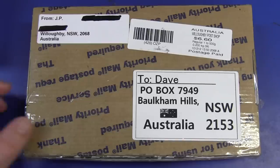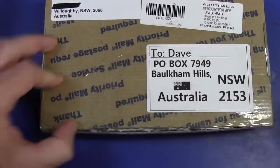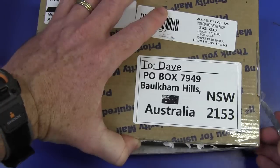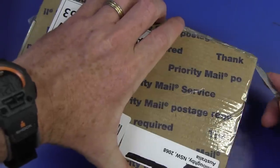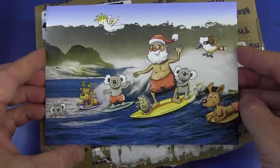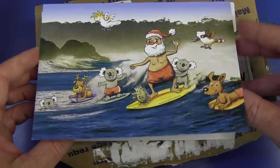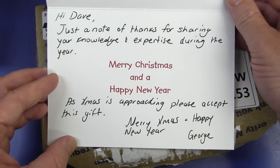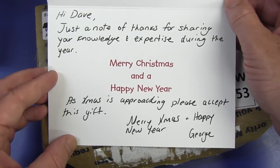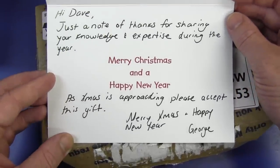Beauty. And we've got another Australian one from JP from Willoughby here in Sydney. So let's crack this sucker open and see what we have got. JP. Just initials. Doesn't have a name. Maybe there's a name in the... Oh, what have we got in here? Oh, look at this. Oh, is it a Christmas card? Hey. Aussie Santa. Hey, Aussie Santa. There you go. Cockatoo, couple of koala bears, kangaroo, kidna, kookaburra, beauty. Hi, Dave. Just a note of thanks for sharing your knowledge and expertise during the year. Merry Christmas and a Happy New Year. As Christmas is approaching, please accept this gift. Thank you very much. From George. Excellent. Thank you very much, George. Sorry for not opening this before Christmas. By the way, it's now 2013. By the way, Happy New Year, everyone.